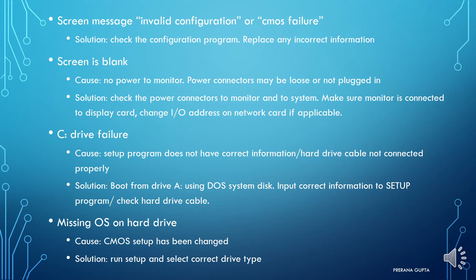For the screen message 'invalid configuration' or 'CMOS failure,' the solution is to check the configuration program and replace any incorrect information. If the screen is blank with no power to the monitor, power connectors may be loose or not plugged in. Solution: check the power connectors to the monitor and to the system, make sure the monitor is connected to the display card, and change the I/O address on the network card if applicable.